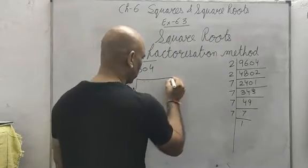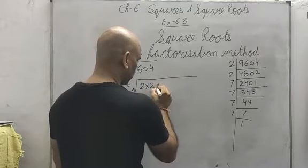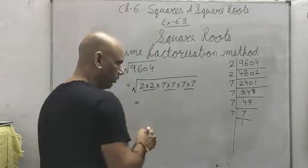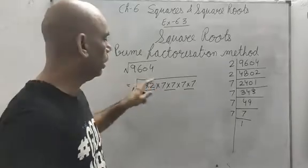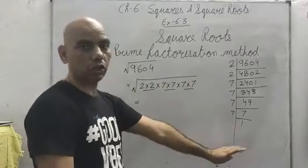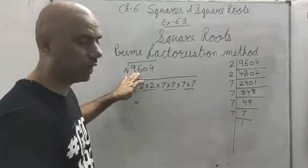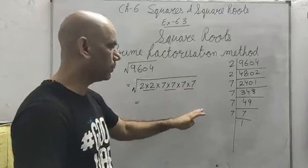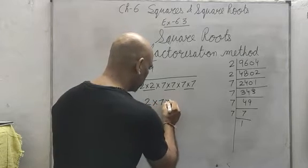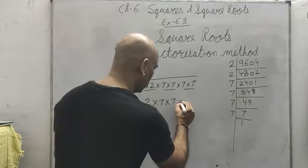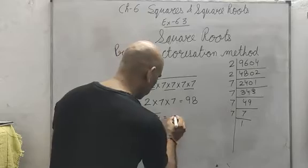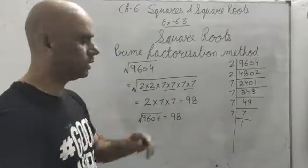Here I got the prime factors of 9604. There is a pair of 2 and there are two pairs of 7. Whenever you find square roots, you will get digits in pairs only — if not, your prime factors are wrong. Taking one from each pair: 2 and 7 × 7 = 49, so 2 × 49 = 98. The square root of 9604 is 98.